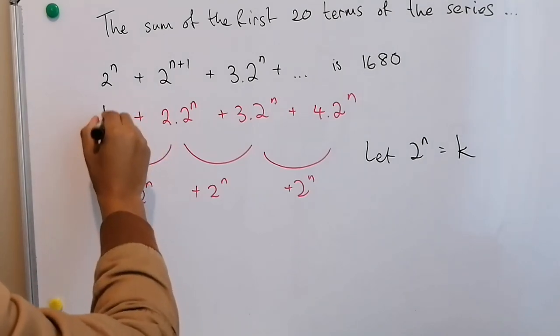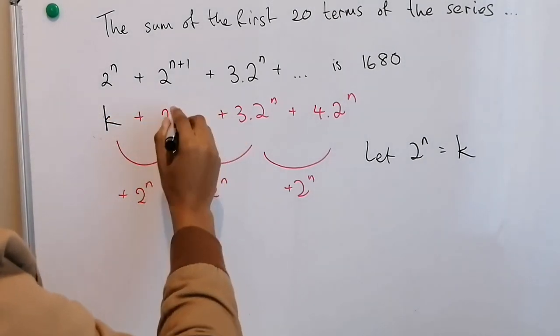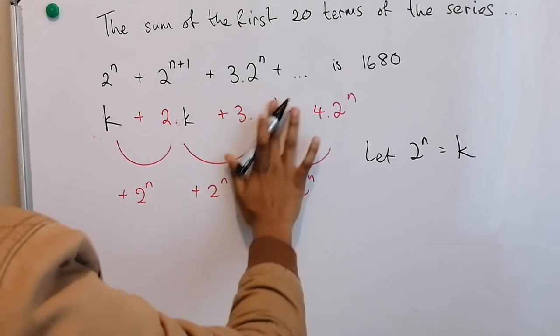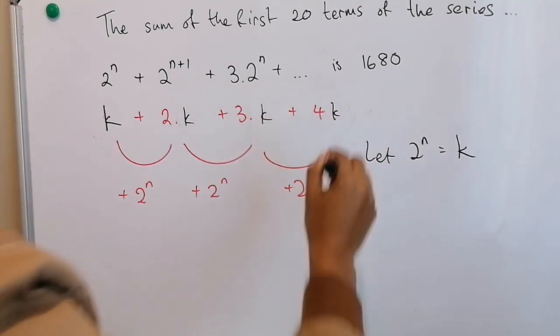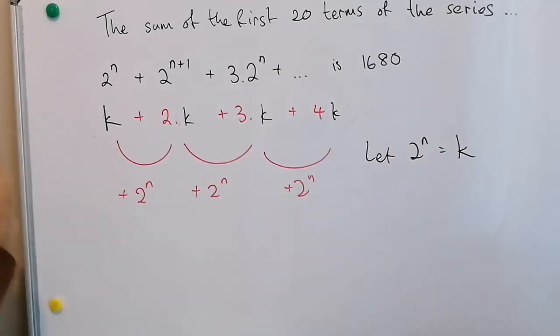That means that this is then now k. This would be 2k. This 3k. And that 4k. And we go all the way up until 20k. If you add all of these up, it should equal to that total. I'm going to be using the sum formula to add this up a bit quicker.